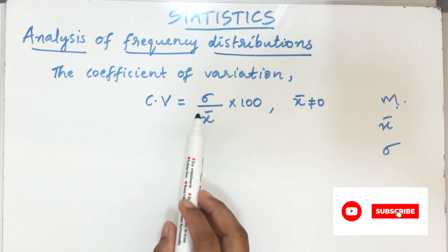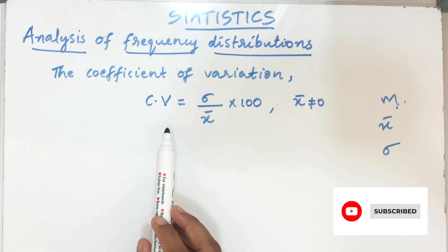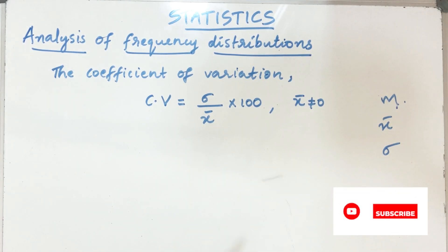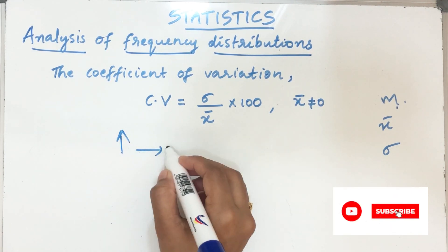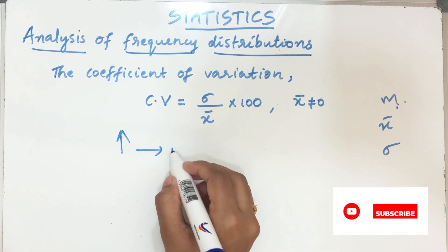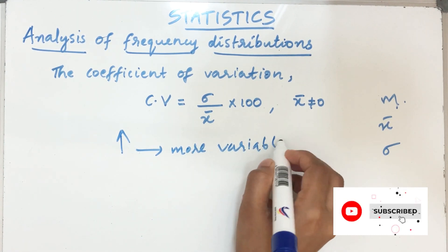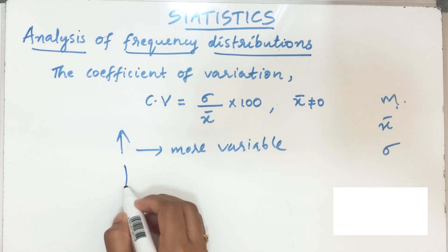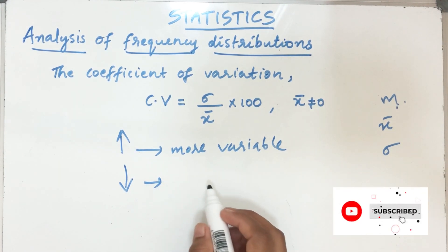So we can use the coefficient of variation to compare the variability of two series with different units. If the CV is very high, we say that the series is more variable. The series with a lesser CV will be more consistent than the other.